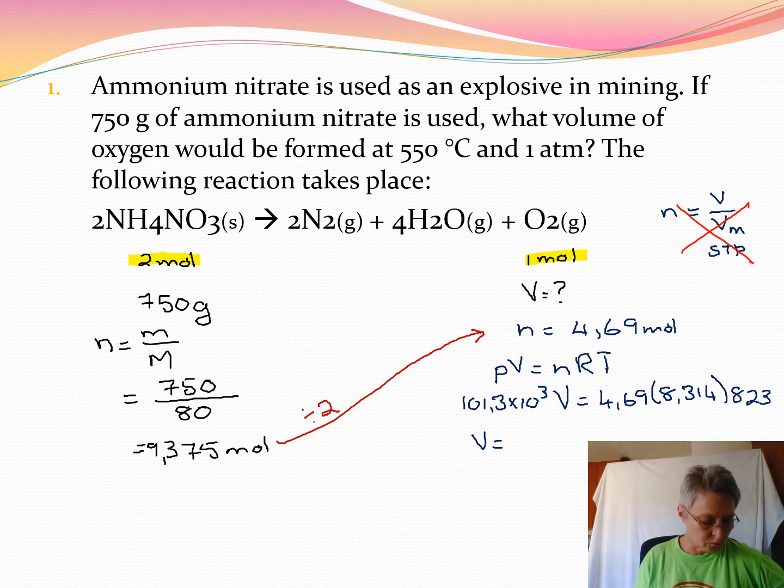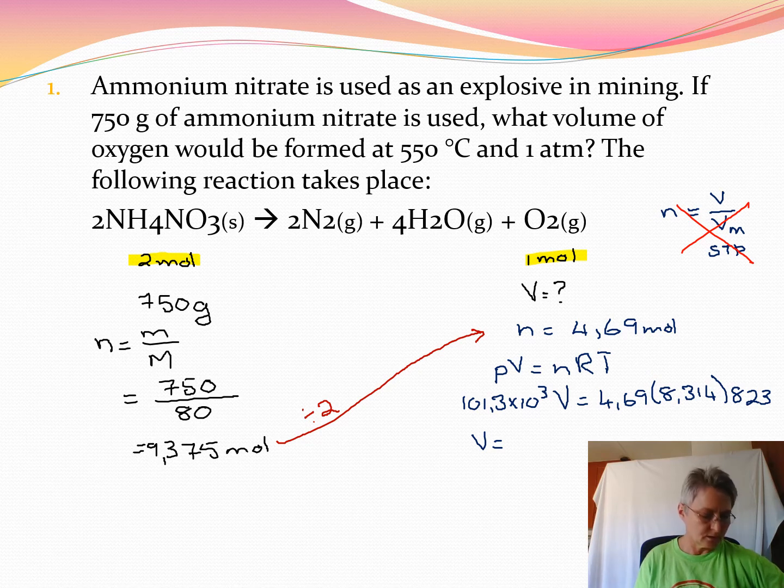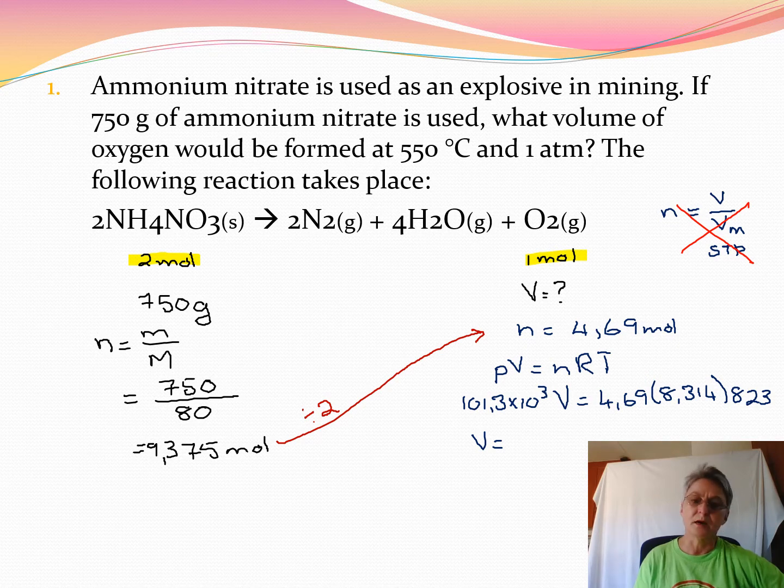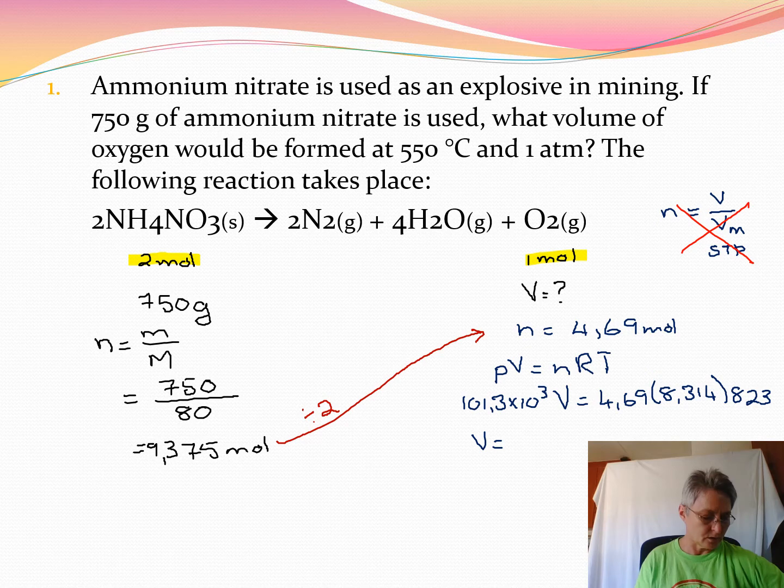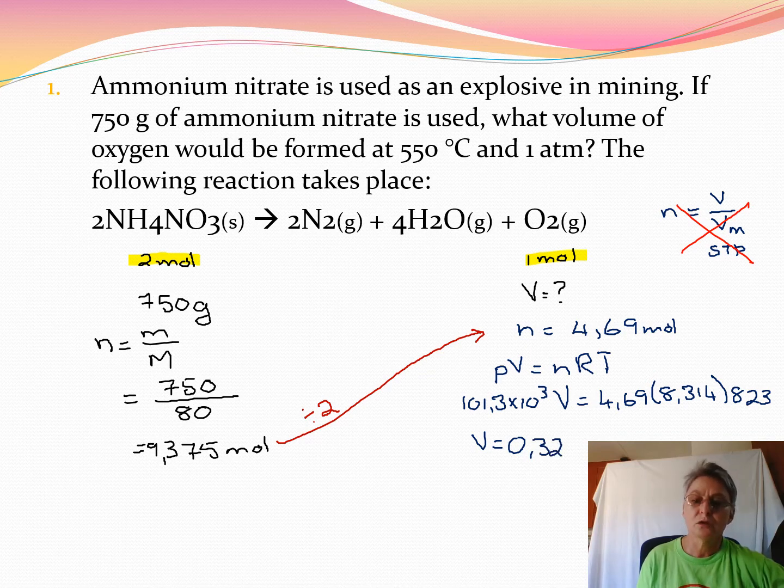If we use those values, the volume would be 823 times 8.314 times 4.69, and all of that must be divided by 101.3 EXP3. That gives us 0.32 cubic meter volume.